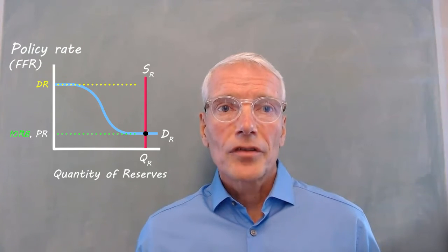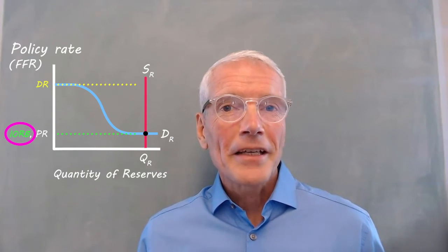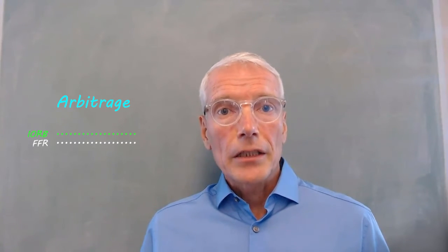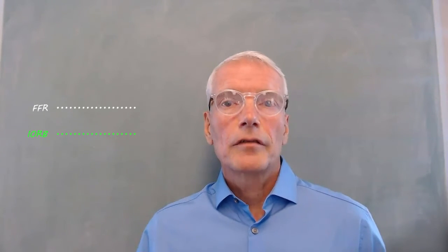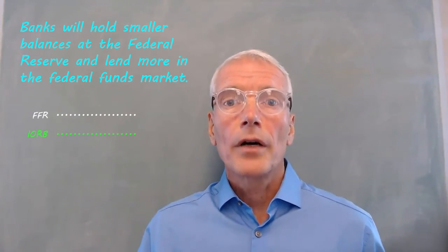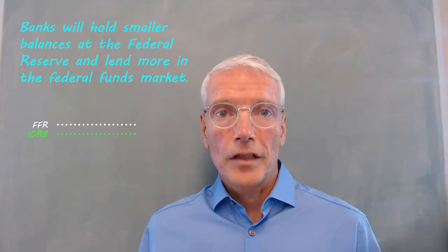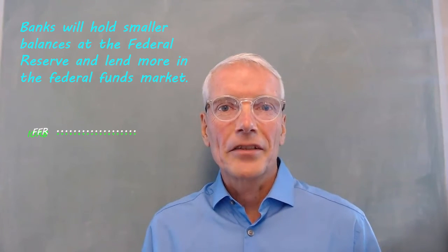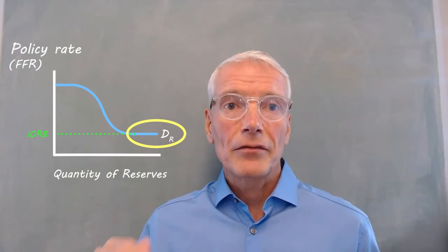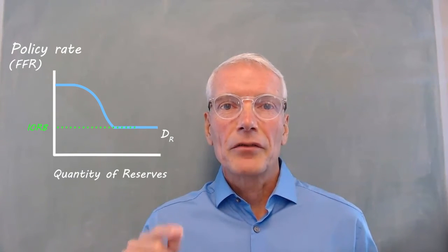The central bank can influence the policy rate on the low end of the demand curve by changing the interest on reserve balances rate. If the interest on reserve balances rate is above the policy rate, arbitrage brings the policy rate up to the interest on reserve balances rate. If the interest on reserve balances rate is below the policy rate, banks will hold smaller balances at the central bank and lend out more money to other banks at the relatively high policy rate, increasing the supply of money in the federal funds market and lowering the policy rate until it approximates the interest on reserve balances rate. So the low end of the demand curve — horizontal at the interest on reserve balances rate — will rise and fall with changes the central bank makes in that rate.